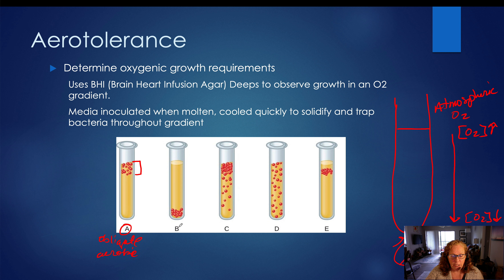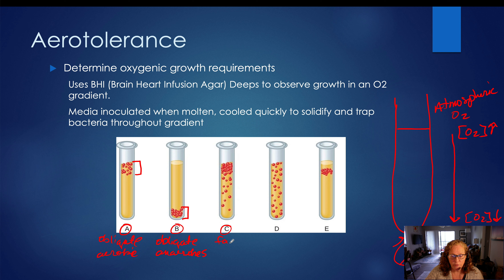In tube B, we have the opposite — growth only where oxygen is absent. So we would refer to these organisms as obligate anaerobes. In our next tube, we have what are called facultative organisms — sometimes referred to as facultative anaerobes, but we just call them facultative. Facultative organisms are capable of altering or switching their metabolism depending on the oxygen levels that are present.